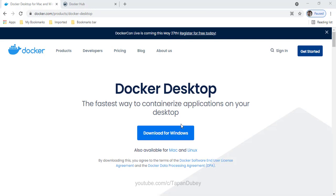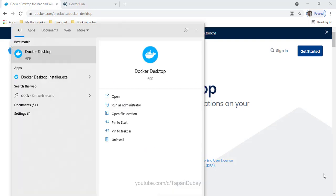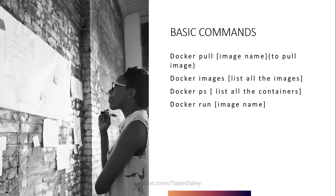After successful installation of Docker Desktop, you can find it in the programs list. Let's open our Docker Desktop. Before we get our first image from Docker Hub, let's first understand a few basic commands. We have the command 'docker pull' followed by an image name, which pulls the image.